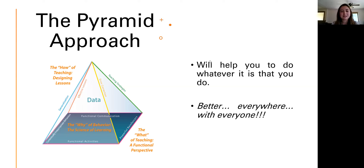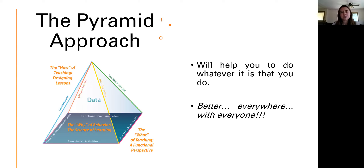Now let's break the pyramid approach down. We're going to start with the foundation. At the bottom is the why of the behavior — this is basically the science of learning. A behavior explains much about why people do what they do. The second part is the what of teaching. Once we begin to understand why people do what they do, we next need to consider what to teach, because we want to change the things they say or do — which means the behavior.